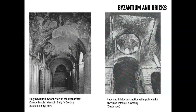Hagia Sophia is the most renowned example of Byzantine architecture, but it is not a standalone phenomenon. Many other churches — not so large or magnificent — survive, often converted to mosques, and reveal the characteristic construction systems of the time. Byzantium was initially an offshoot of Roman culture and adopted important Roman construction techniques, particularly brick construction, which was very useful for creating domes and complex overhead configurations. Bricks have a tolerance that can be built into the construction process.